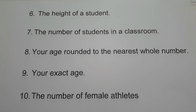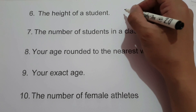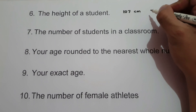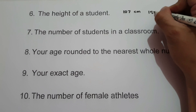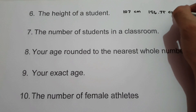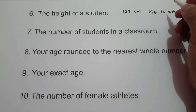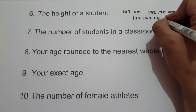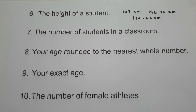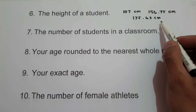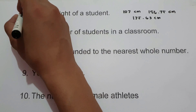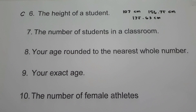On example number 6, the height of a student. What is the height of a student? It could be 107 centimeters, 156.75 centimeters, or 175.63 centimeters. This information can be measured. Therefore, number 6 — the height of a student — is an example of continuous random variable.